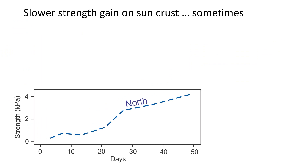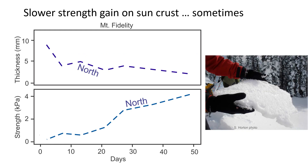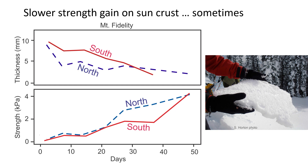By going back to a north-facing slope six times over six weeks, ASARC researchers observed a surface oar layer gaining strength. During the same period, the layer was thinning. Also during the same six weeks, they measured the surface oar layer on a nearby south-facing slope where the surface oar layer was on top of a sun crust. As shown by the red lines, the surface oar layer was slower to thin and slower to gain strength on the south slope. In our experience, this is not that common, which suggests it is easy to be surprised by a surface oar layer on a south-facing slope.